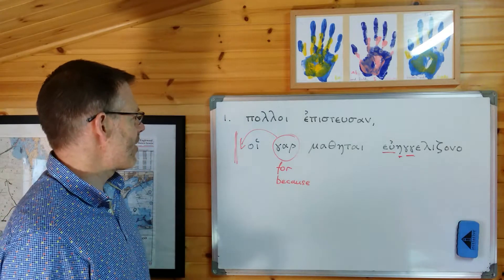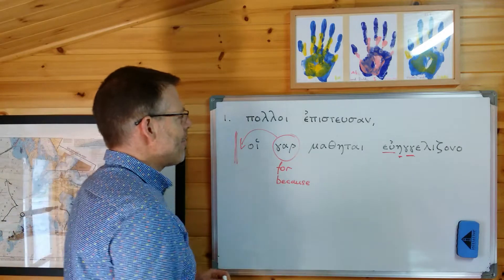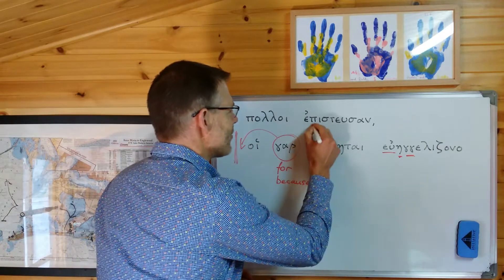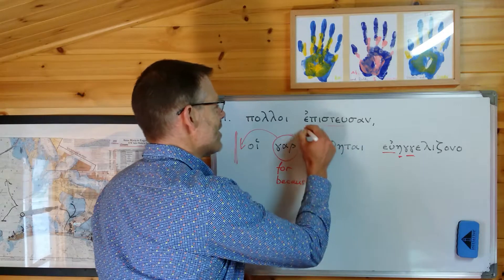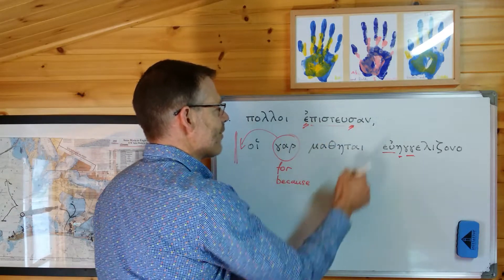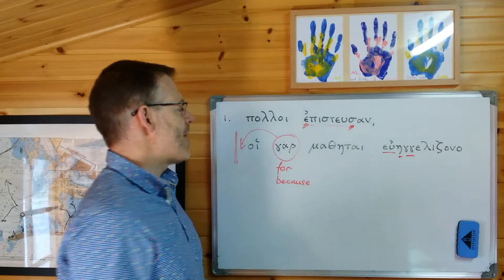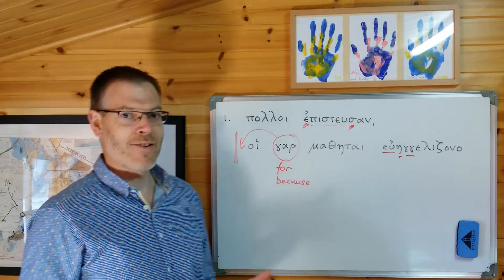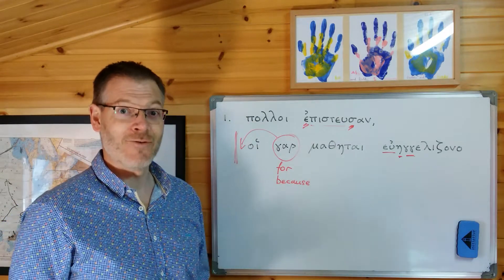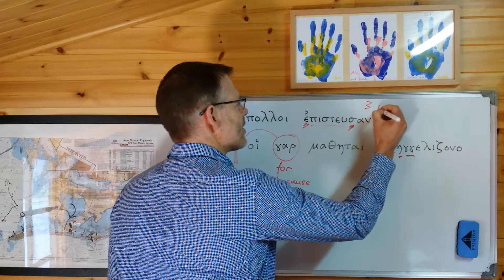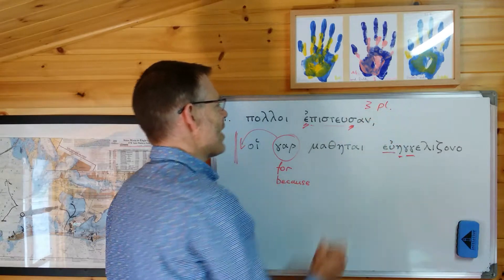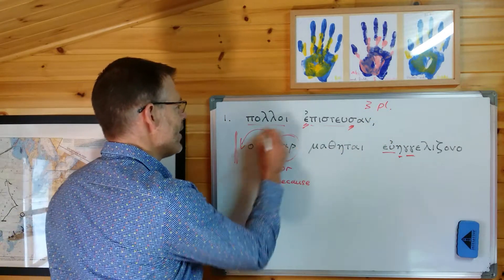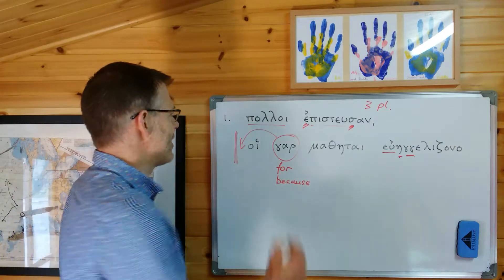Let's get on with translating it. Polloi episteusan - pistuo is the root of this verb, it's aorist: epsilon augment, sigma suffix, and an ending. Elusat, elusas, elusen, elusamen, elusate, elusan - that is third person plural, so 'they believed.' Who's the 'they' who believed? Polloi, in the nominative - 'many believed.'